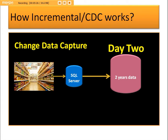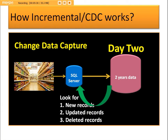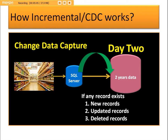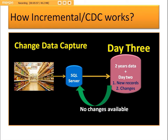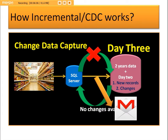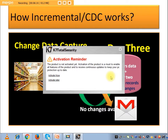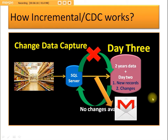The job checks for any changes — any new records created, updates, or deletes — that happen in the source table. If there are changes, they will be loaded into the data warehouse. On day three, if no changes occur — for example, it could be a holiday or Sunday — we will not load data. Instead, a notification email will be sent to the respective team indicating that there are no changes available in the system.